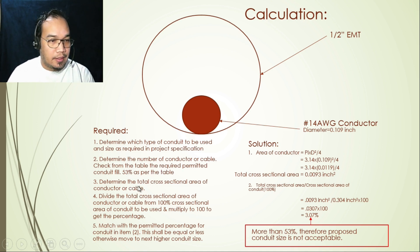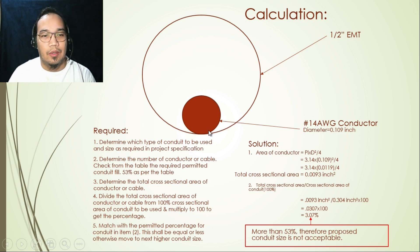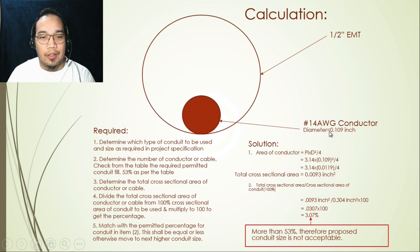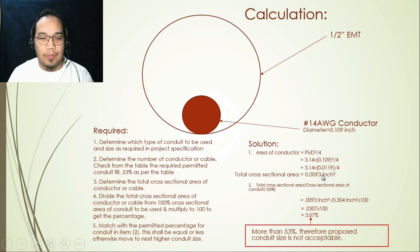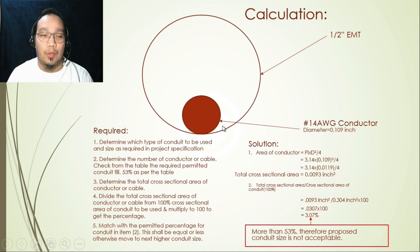The next step is to determine the total cross-sectional area of the conductor or cable. In this example, we have a number 14 American Wire Gauge conductor with a diameter of 0.109 inches. The area of a circular conductor is π × d² / 4, which gives us 3.14 × (0.109)² / 4, resulting in a total cross-sectional area of 0.0093 square inches for this one conductor.